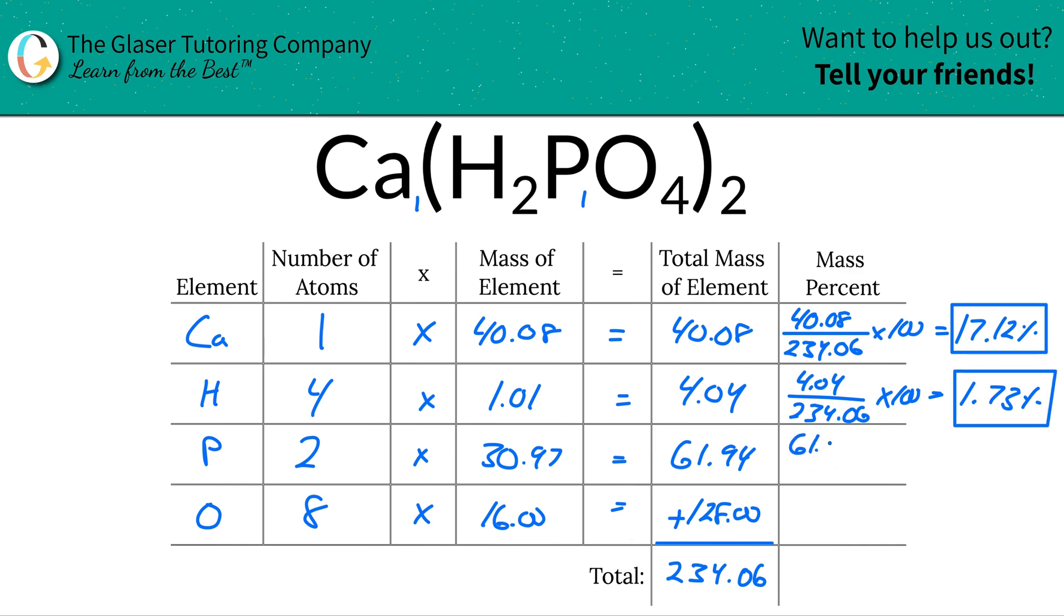Same thing for phosphorus, 61.94, divided by the total mass of the entire compound, 234.06. You see how routine this becomes? And then that's going to work out to be about 26.46%.